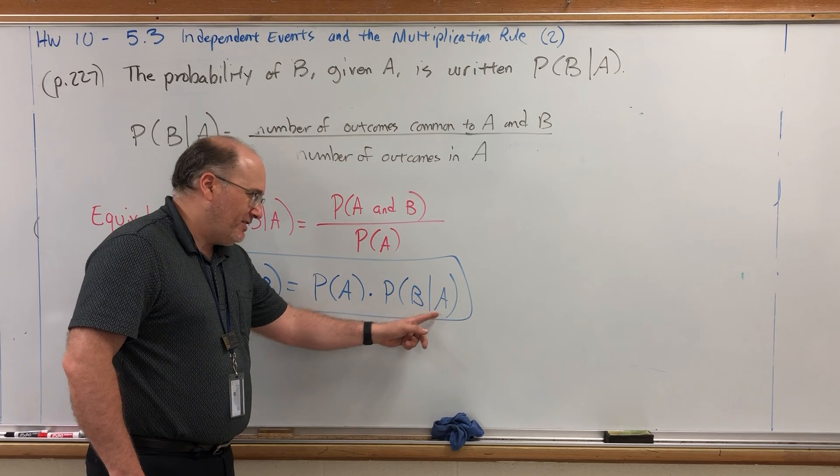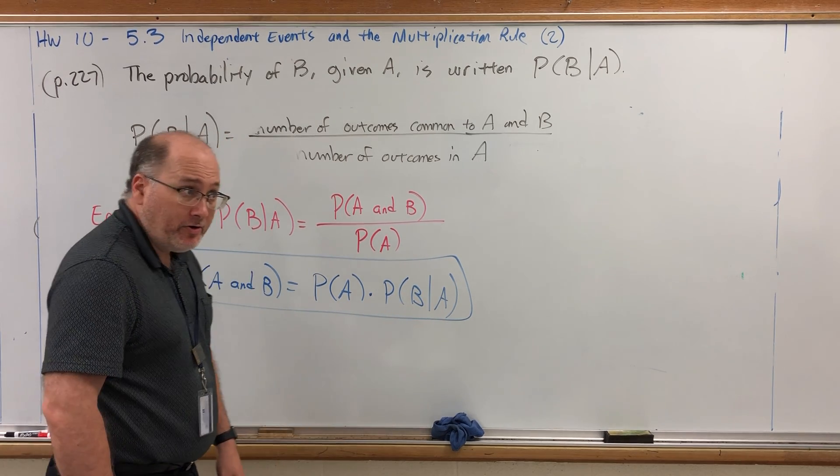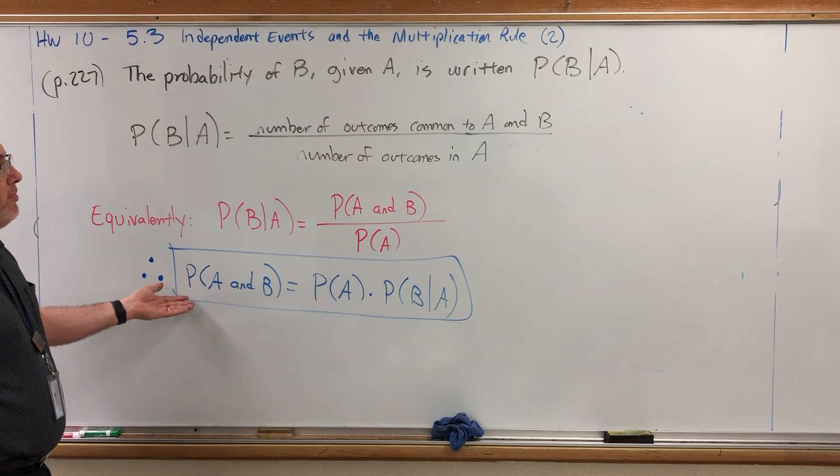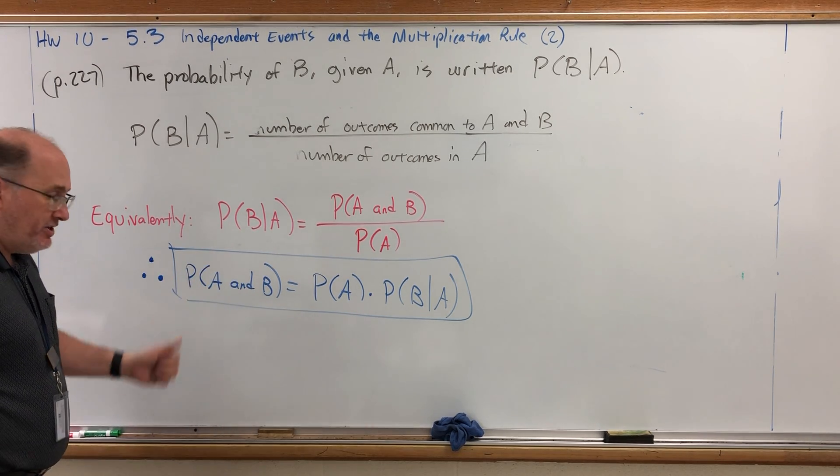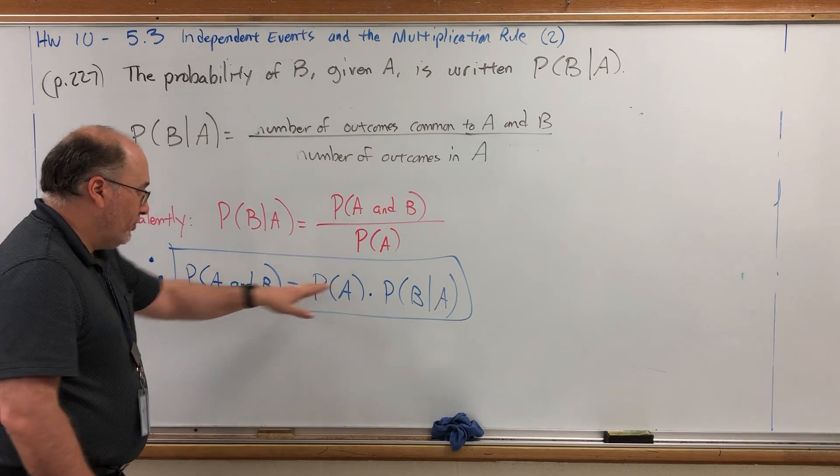So we have a formula for calculating the probability of A and B. A joint probability, if you will. And it's a multiplication rule.